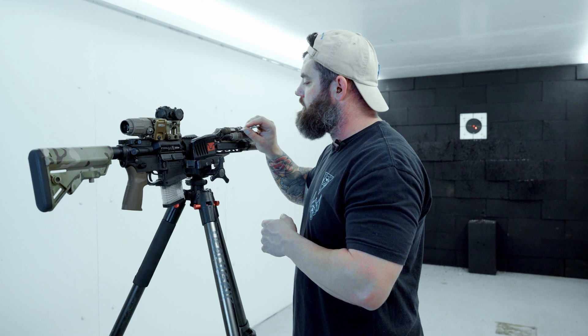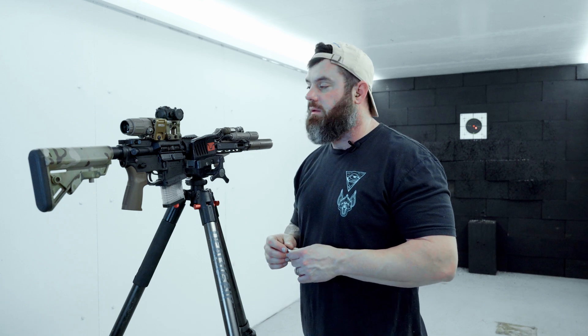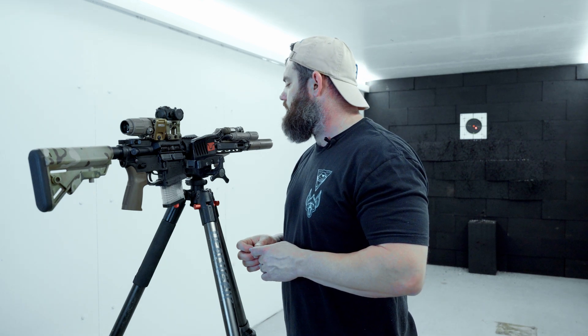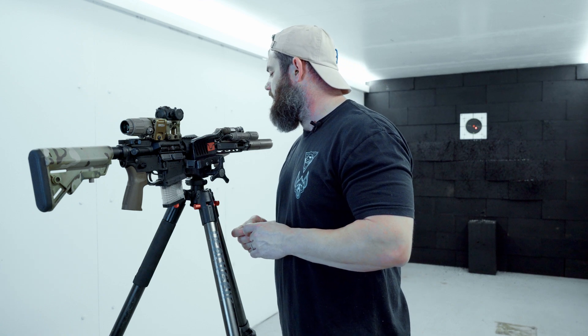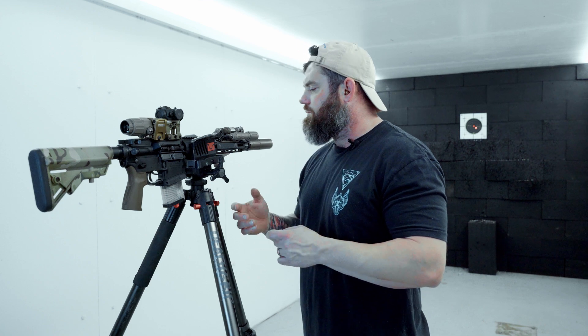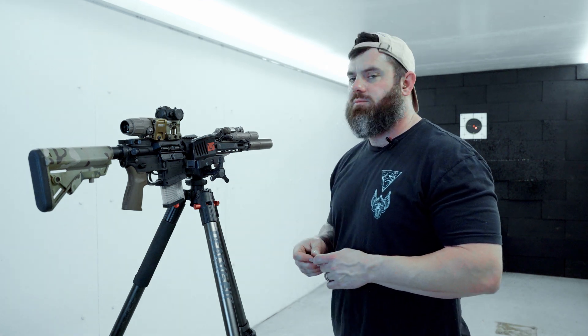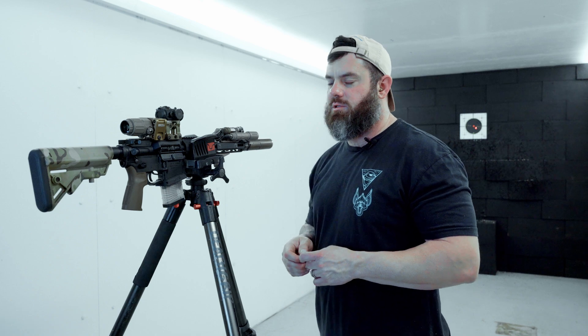Each laser is going to have a different measurement per click. Some of them are half MOA. Some of them are a full MOA. I'm actually not sure what the measurements are on the NGAL, but I would have to assume it's probably a half. But essentially this is what it would look like. This is how we recommend you do it. Find a range that's 25, 50, 100 meters, whatever you decide works for you. Put a couple shots on a target of your choice, and then this is how you adjust the laser. Come back and confirm.